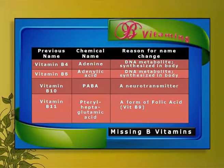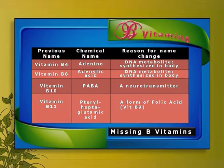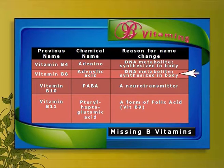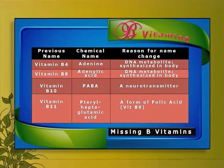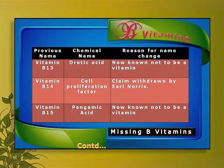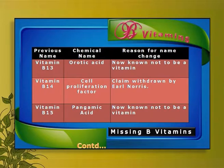Let us quickly go through that list. For example, vitamin B4 was adenine — it was a DNA metabolite and synthesized in the human body. So was vitamin B8 or adenylic acid, which is a nucleobase and not strictly a vitamin. Vitamin B10 was PABA or para-aminobenzoic acid, which is a neurotransmitter. Vitamin B13 was orotic acid — it's not a vitamin. B14 was a cell proliferation factor discovered by Earl Norris, and later he himself withdrew its claim as a vitamin.